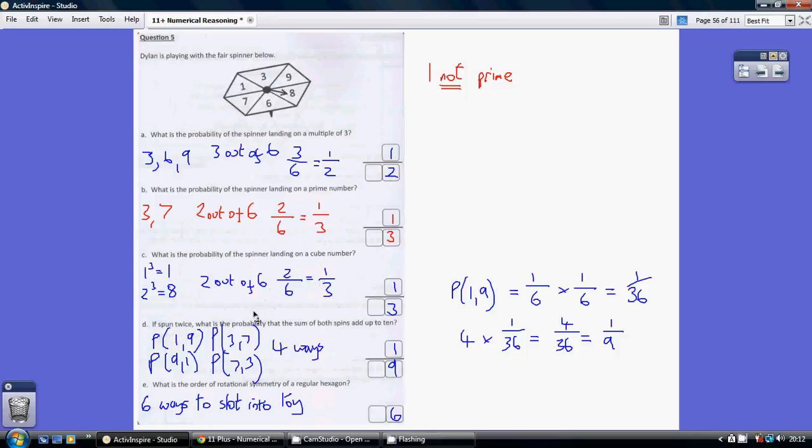Now part D is quite tricky. If spun twice, what is the probability that sum of both spins adds up to 10? Well there are 4 ways of spinning it twice and it totaling 10. You could get a 1, then a 9, or a 9, then a 1, a 3, then a 7, or a 7, then a 3. So there are 4 ways of getting what we want.